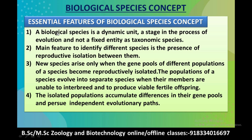Now we will talk about the essential features of biological species concept. The first characteristic feature is that a biological species is a dynamic unit, a stage in the process of evolution and not a fixed entity as taxonomic species.